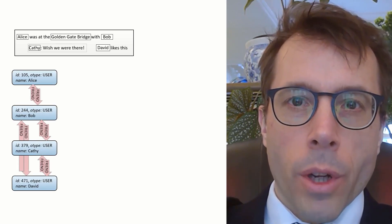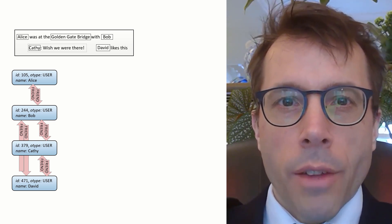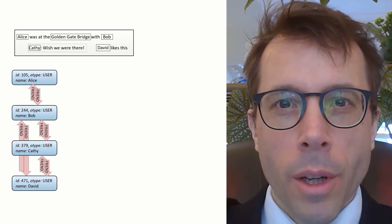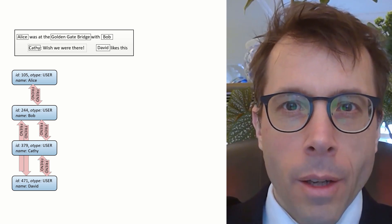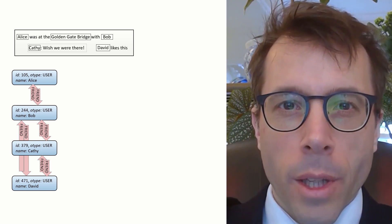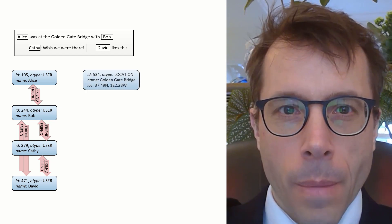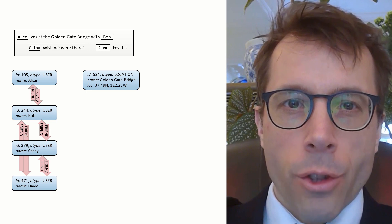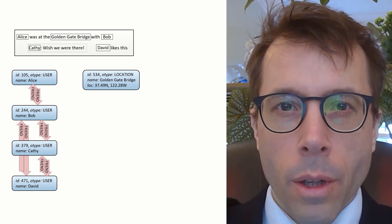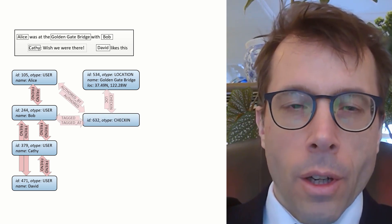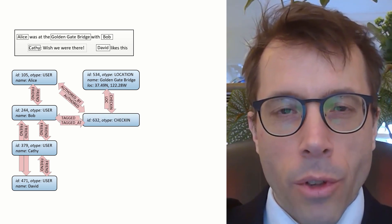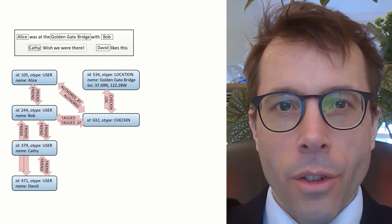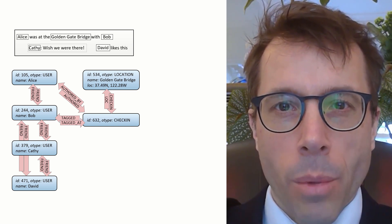The first bit of the graph is straightforward. There are four people here with some friendship relationships between them, so we have a graph with four vertices and the appropriate edges. In real life a friendship has to be a reciprocal relationship, but Facebook has decided to represent a friendship link as a pair of directed edges. There's also a vertex for the location — the Golden Gate Bridge. To represent the relationship between Alice and Bob and the bridge, Facebook decided to use a check-in vertex: a vertex representing an instance of being in a place, with an instigator Alice, a location, and other tagged users like Bob.